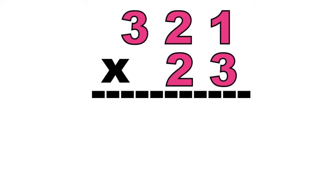Let's have our first example: 321 times 23. To multiply a two-digit factor and a number, multiply all pairs of digits from the factors and put their products on their corresponding place values, then add the partial products.